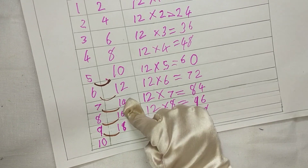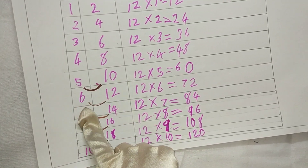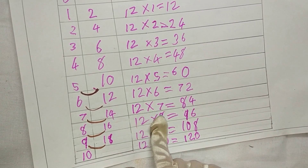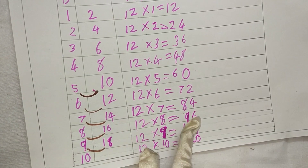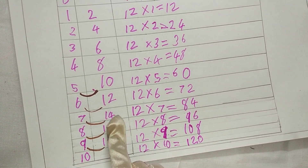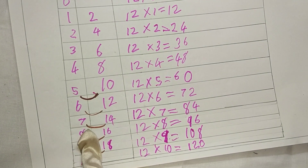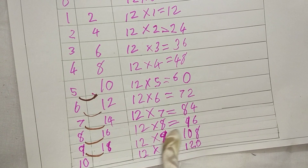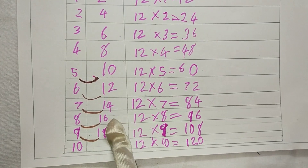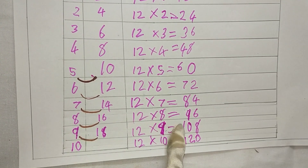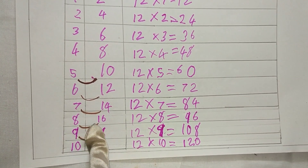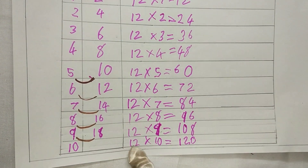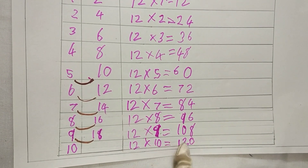The 6 I make into 7 by counting the 1 from 12, so 12 into 7 is 84. I'm taking the 4 from the 14, and to make the tens digit I take 7 plus 1 to make 8. 12 into 8 is 96 — taking the 6 from 16 and the 1 to make 9. 12 into 9 is 108 — taking the 8 from 18, and the 10 to make it 10. For the 10th one we don't count from here — 12 into 10 is 120.